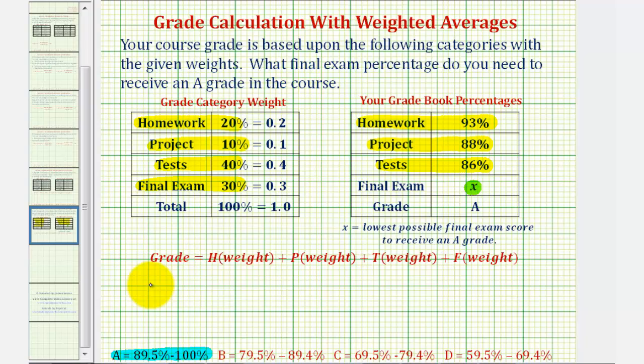So our equation will be 89.5 equals the homework percentage, which is 93, times the weight of 20% as a decimal, 0.2, plus the project grade of 88 times the weight of 10% as a decimal, 0.1.